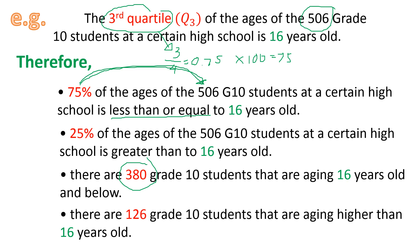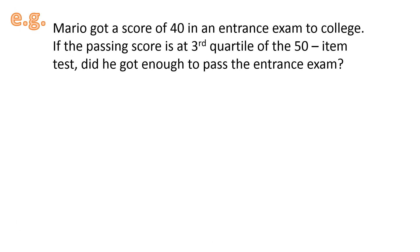I hope you understand how it is not that difficult to interpret basic information using measures of position. Let's try to answer this problem. Mario got a score of 40 in an entrance exam to college. If the passing score is the third quartile of the 50-item test, did he get enough score to pass the entrance exam? For us to know, we need to determine what is the passing score — it is only said that the passing score is at the third quartile.